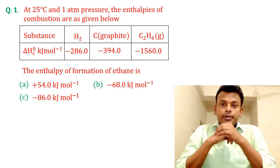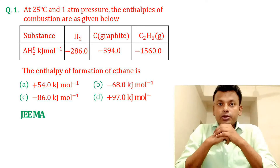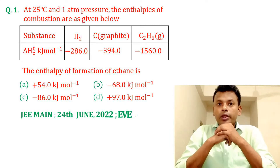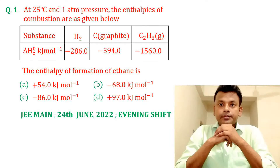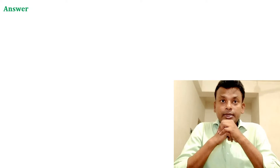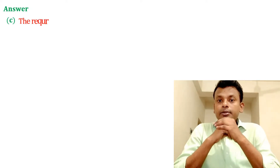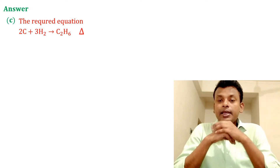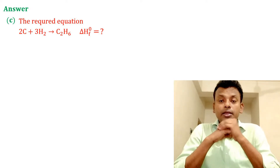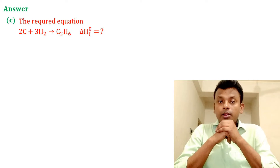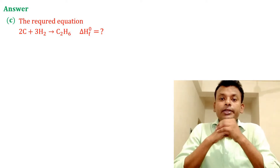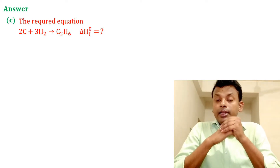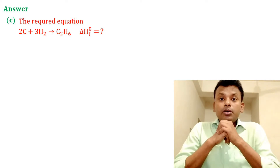This question was set in JEE Main 24th June 2022 evening shift. Answer: option C is the correct answer. The required equation is 2C + 3H₂ → C₂H₆, where ΔH formation equals the value we are calculating — the enthalpy of formation of ethane.